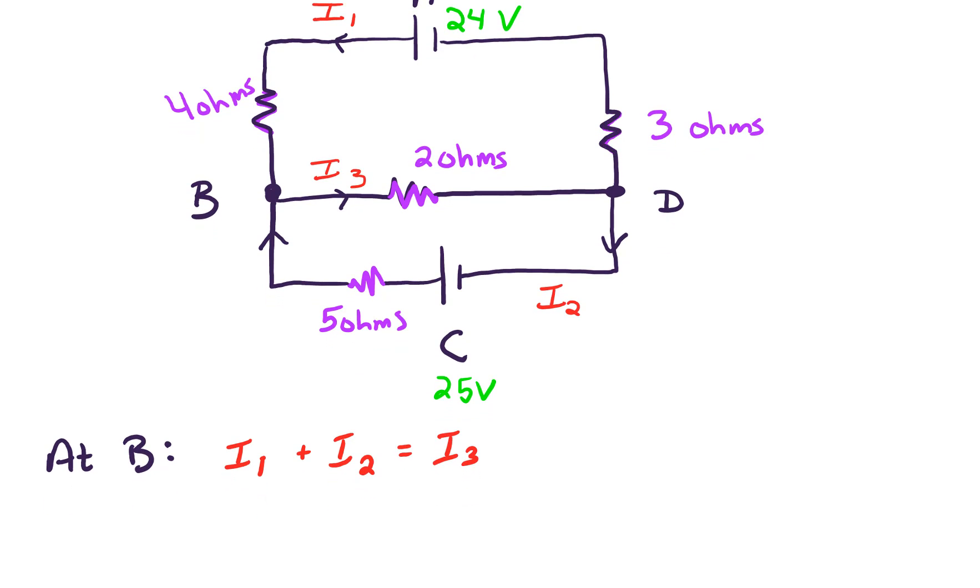And similarly, at D, we've got another junction, we've got I3 coming in, and going out, we have I1 and I2. So that doesn't really add any new information, so we don't really need to keep that piece. So let's erase that just to save some space on the screen here.